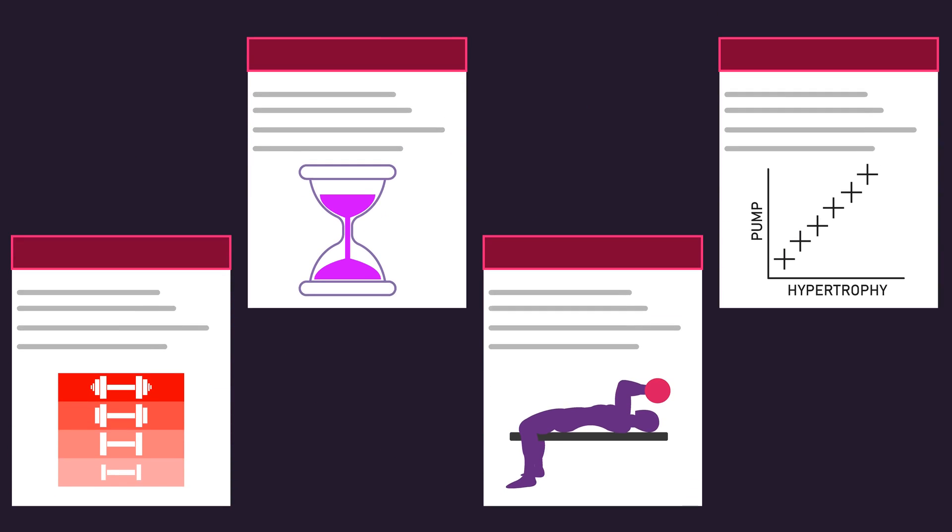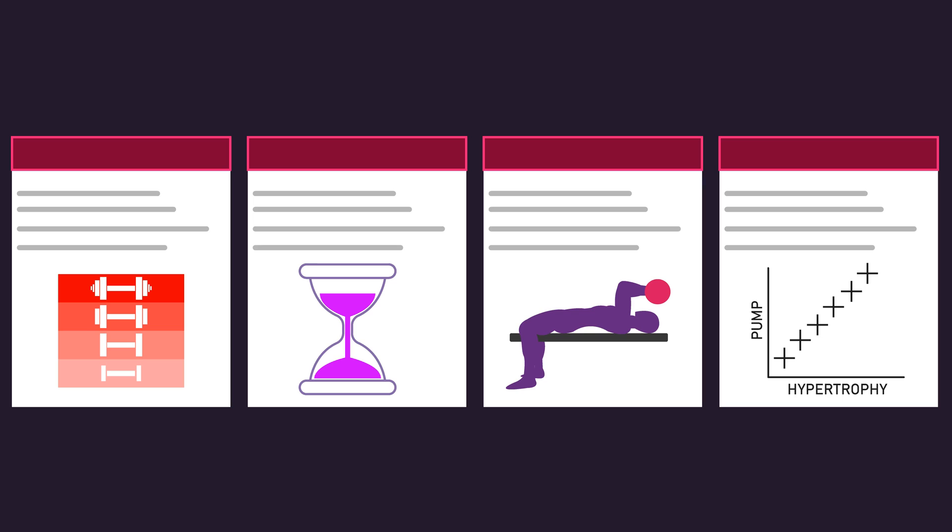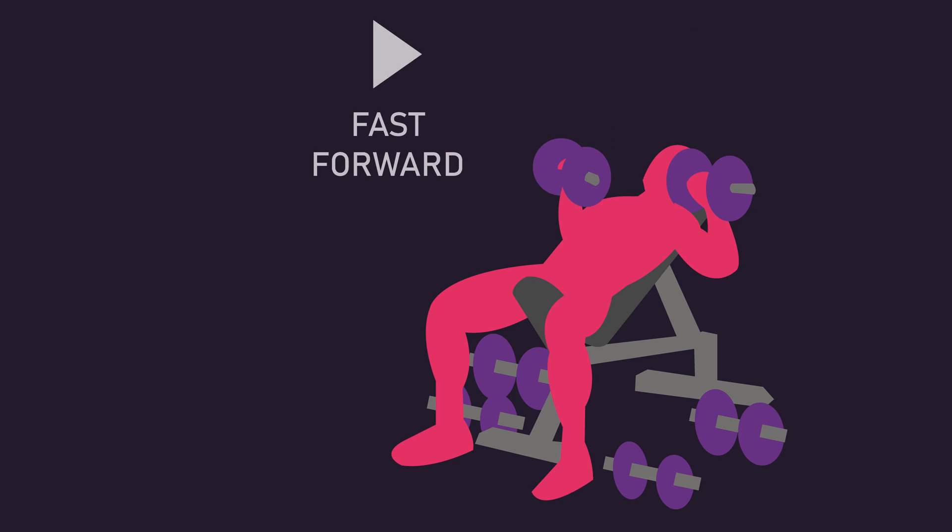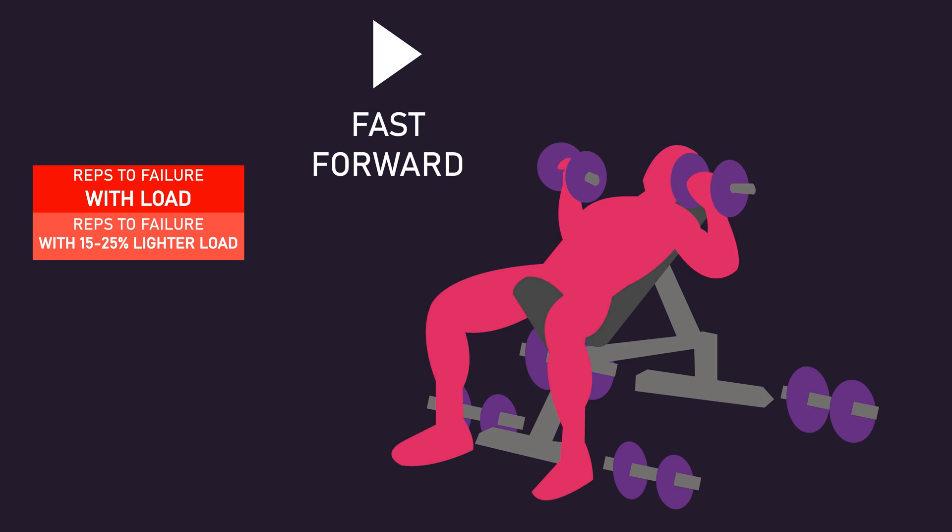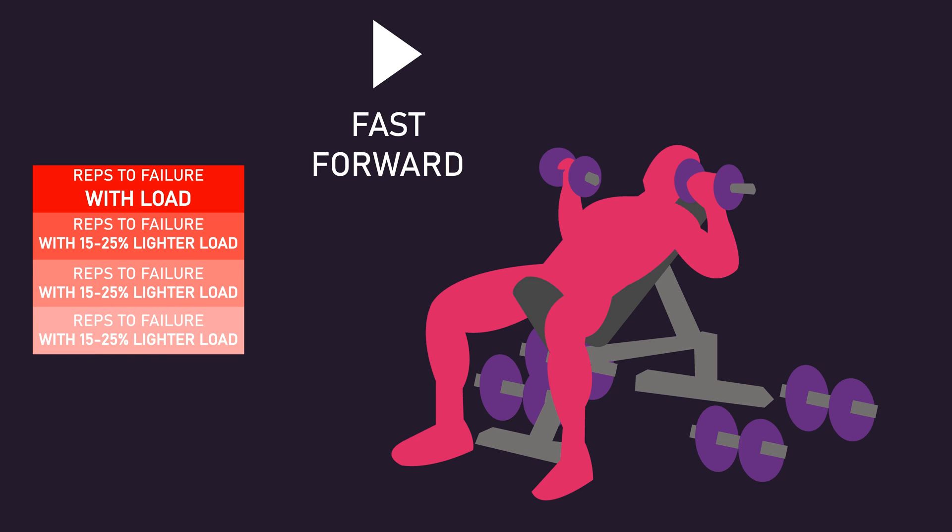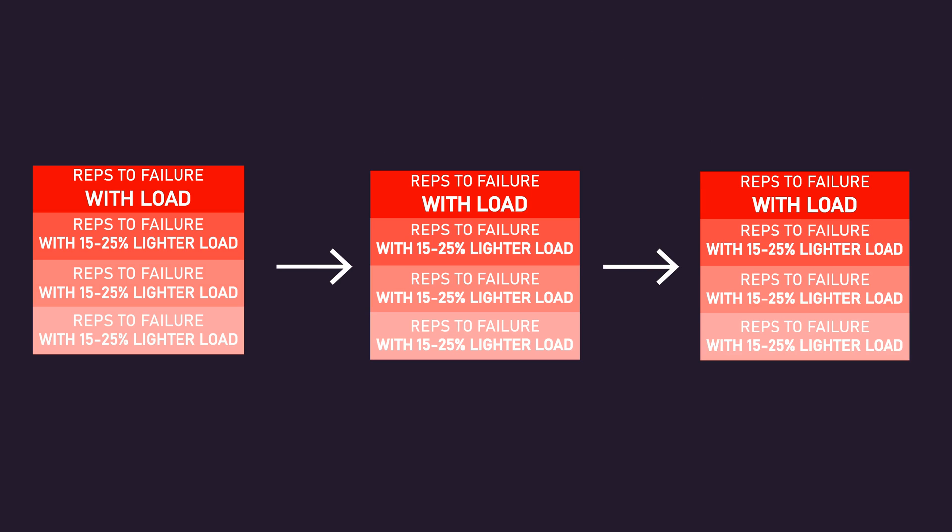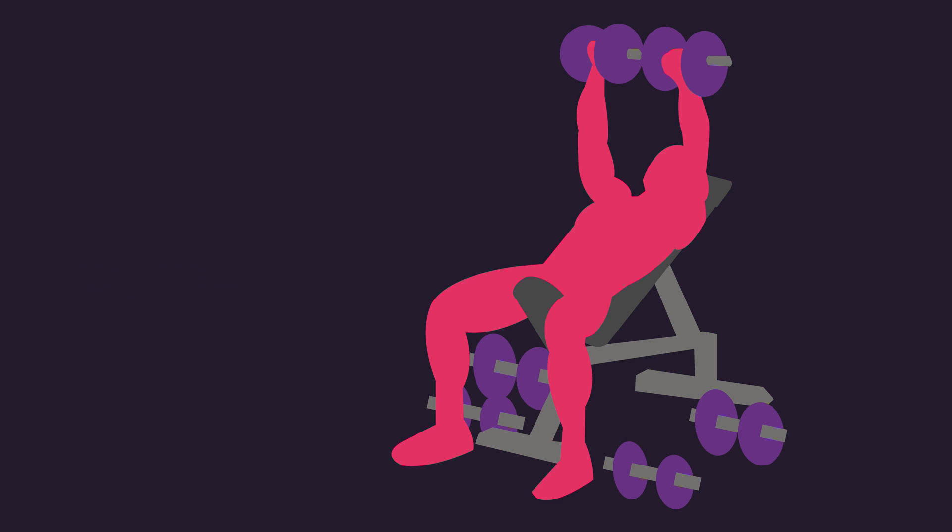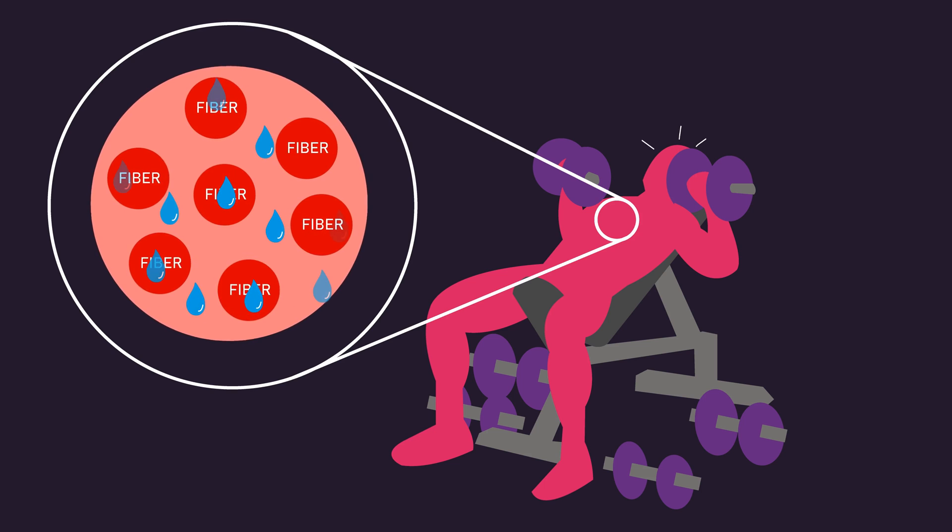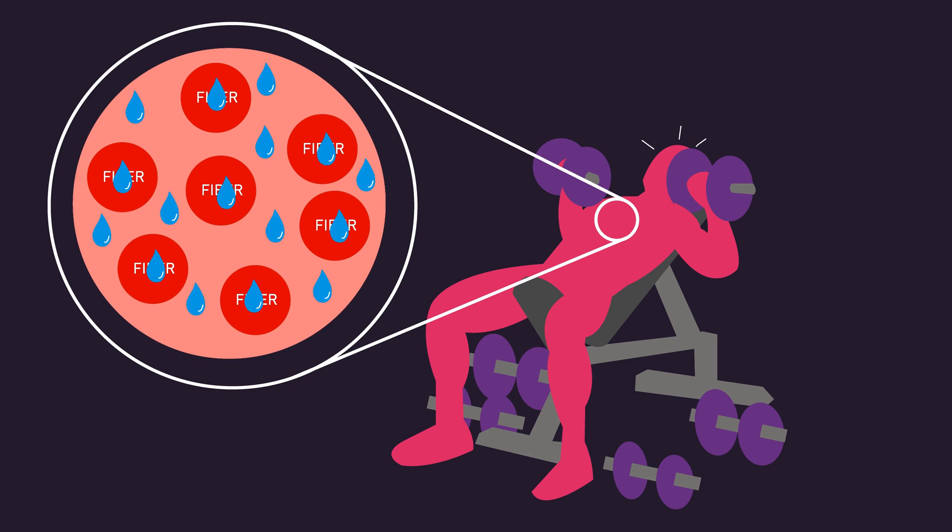Indeed, some areas of the literature may potentially be used as evidence to suggest a greater pump means more hypertrophy. A drop set involves performing repetitions to failure with a given load and then immediately reducing the load, typically by 15-25%, and performing repetitions to failure again. Generally, 1-3 load reductions are done. Moreover, multiple drop sets for a given exercise can be performed with rest intervals between them. Due to the numerous bouts of repetitions to failure performed back-to-back, fluid accumulation is going to be much greater compared to performing normal sets that have you rest between repetition bouts.